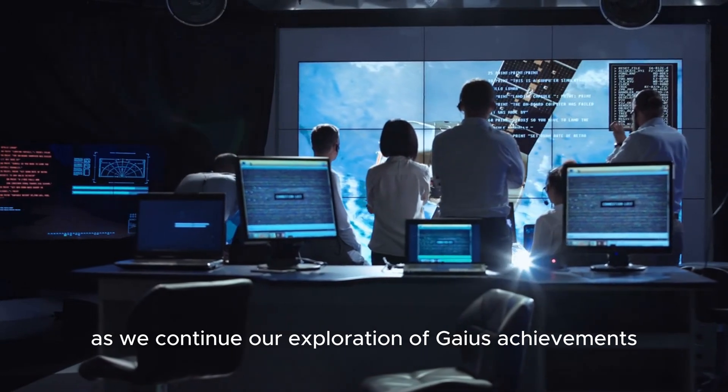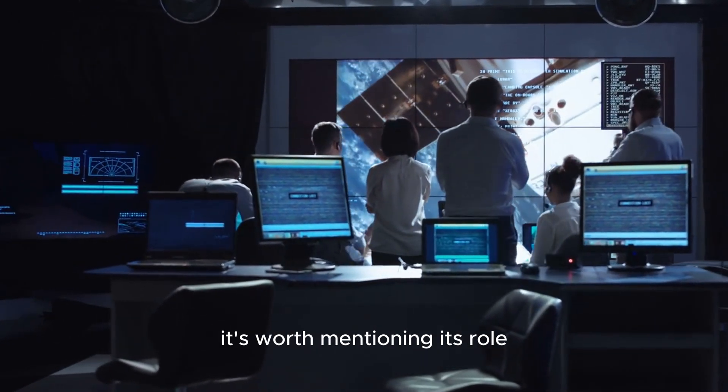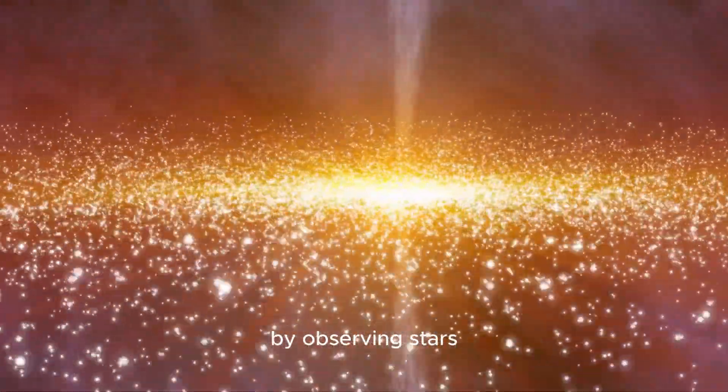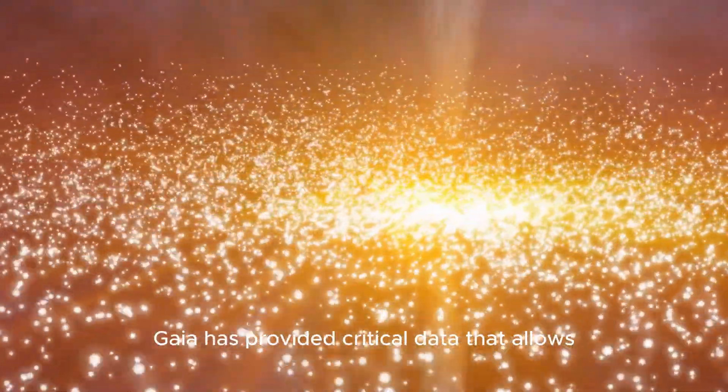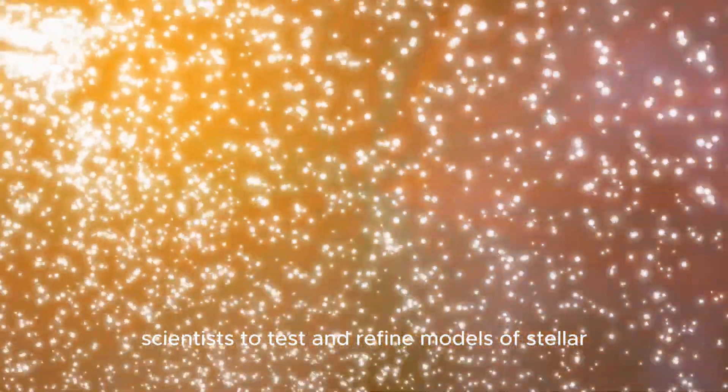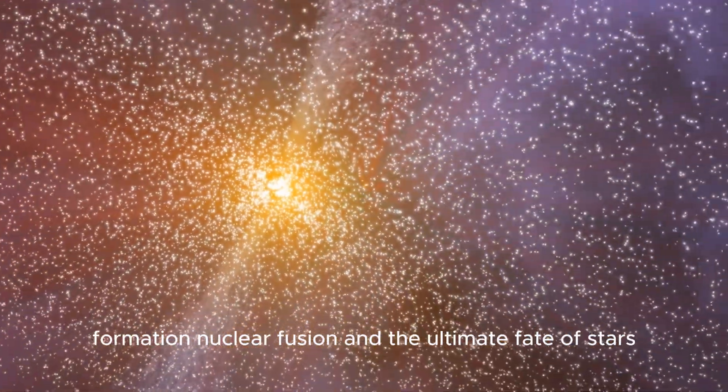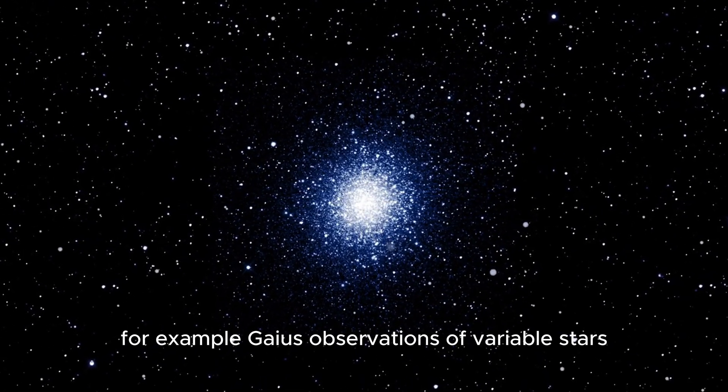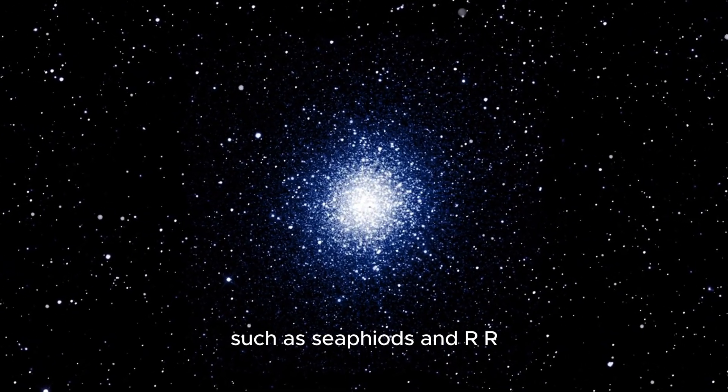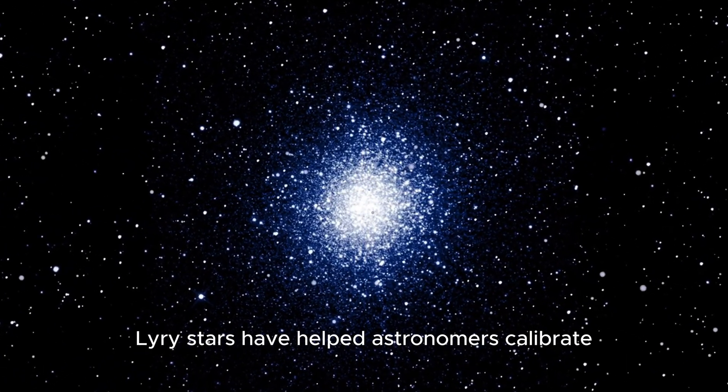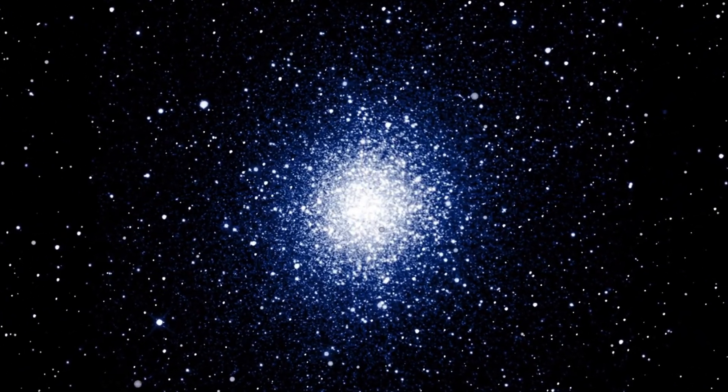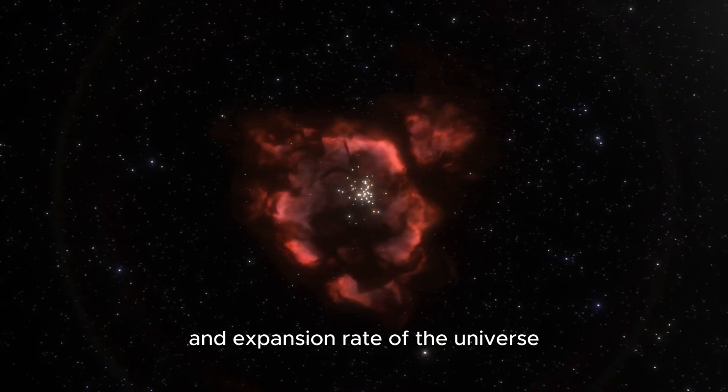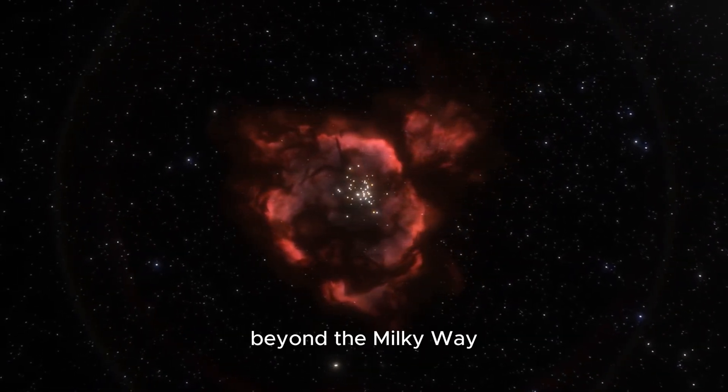As we continue our exploration of Gaia's achievements, it's worth mentioning its role in advancing our understanding of stellar evolution. By observing stars at various stages of their life cycles, Gaia has provided critical data that allows scientists to test and refine models of stellar formation, nuclear fusion, and the ultimate fate of stars. For example, Gaia's observations of variable stars, such as Cepheids and RR Lyrae stars, have helped astronomers calibrate the cosmic distance ladder. This calibration is crucial for determining the size and expansion rate of the universe, as well as for measuring distances to galaxies beyond the Milky Way.